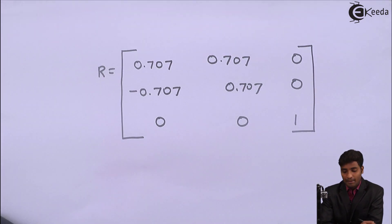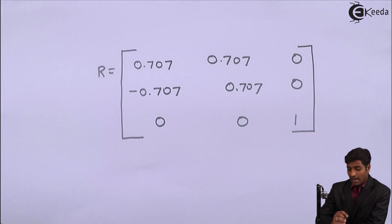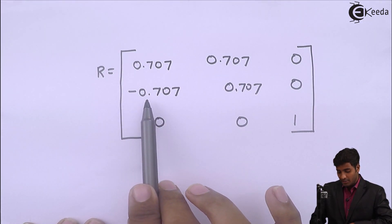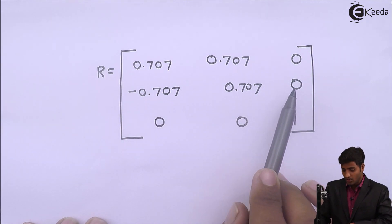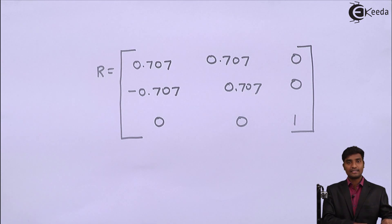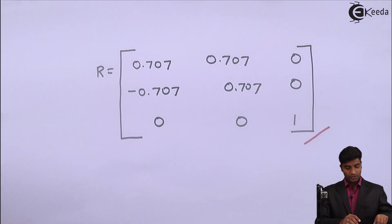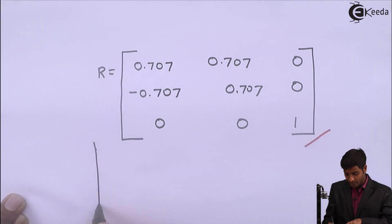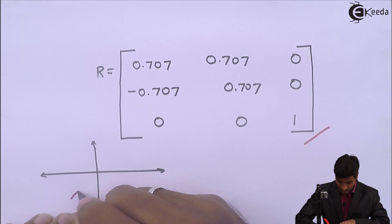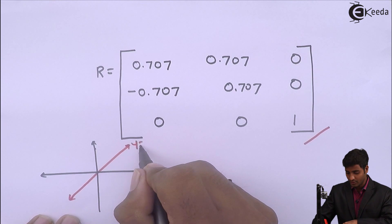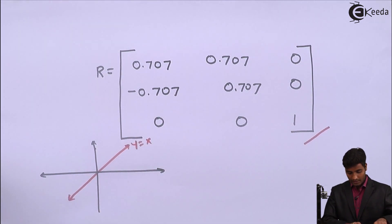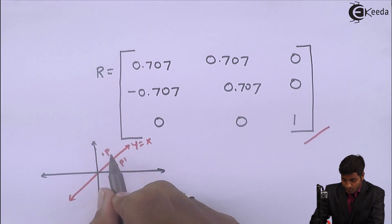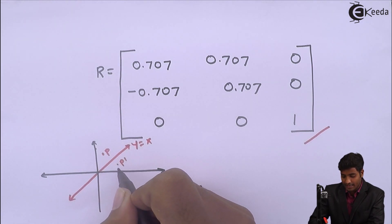The third transformation is back rotation of the line y is equal to x. The line was passing through the origin at an angle of 45 degrees, so I have to rotate it back to its original position by rotating in the anticlockwise direction with theta equal to plus 45 degrees. The standard rotation matrix with theta equal to 45 degrees gives: 0.707, 0.707, 0; minus 0.707, 0.707, 0; 0, 0, 1. After performing this back rotation, the line returns to its original position as y is equal to x, and we have the point P and its reflected point P dash. We have successfully reflected this point about the line y is equal to x.